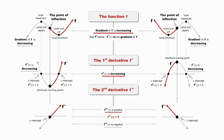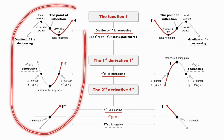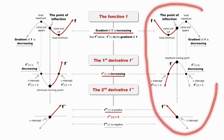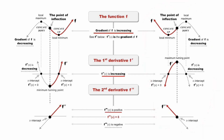This slide has a huge amount of information, so we're going to talk quite a bit about it. I suggest you pause it and just have a good look and see what is happening. On the left-hand side, I have a cubic graph where a is positive, and I've got its derivative and its second derivative. On the right-hand side, I have exactly the same thing but where the a value of the cubic graph is negative.